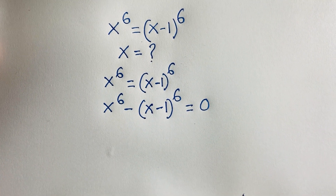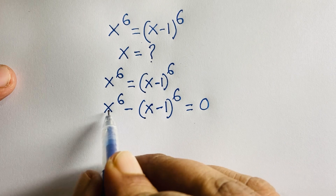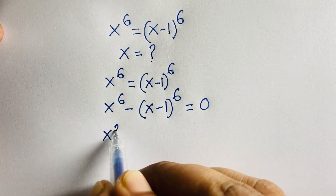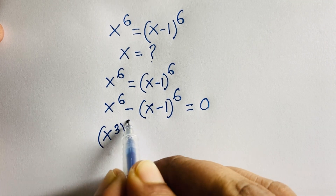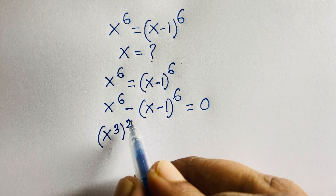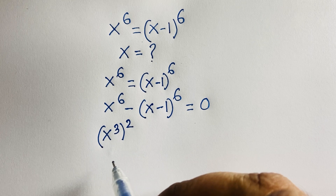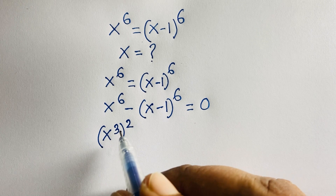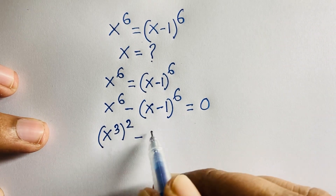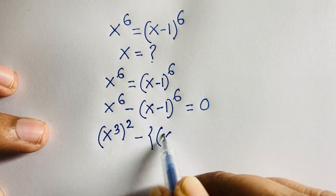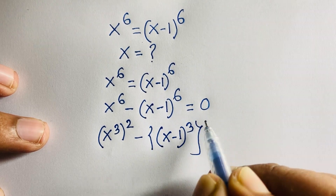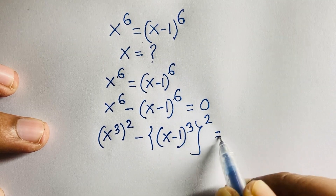I can rewrite x to the power 6 as x to the power 3, whole squared. We know that a to the power n, whole to the power m equals a to the power nm. So 2 times 3 gives 6. Similarly, x minus 1 whole to the power 3, bracket squared, equals x minus 1 to the power 6.